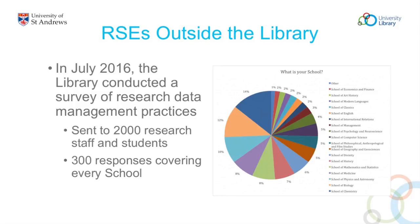Several issues were raised at the launch event. The first was the availability of appropriate version control systems — these are quite crucial for making sure software has been developed in an appropriate manner. And there was a lack of training, especially for PGRs and early career researchers. As part of the JISC Research Data Shared Service pilot we're involved in, a research data management survey was conducted last summer. It was sent out to 2,000 research staff and students, and we had 300 responses covering every school.